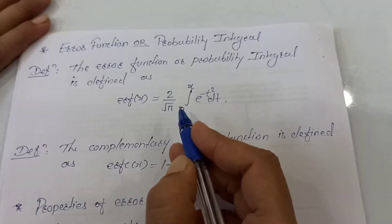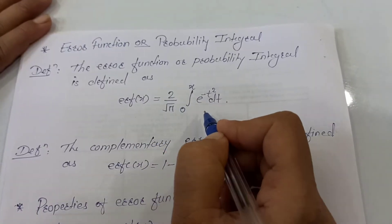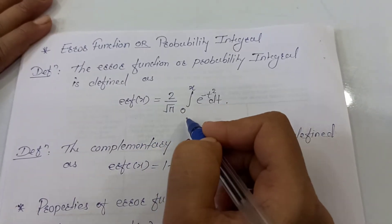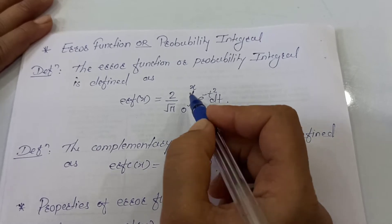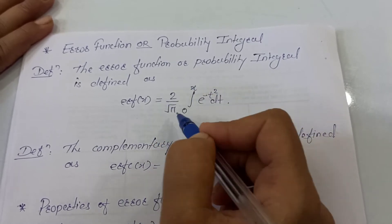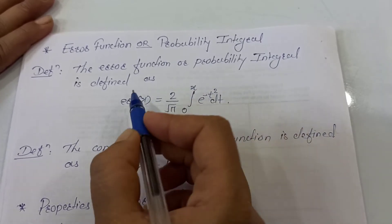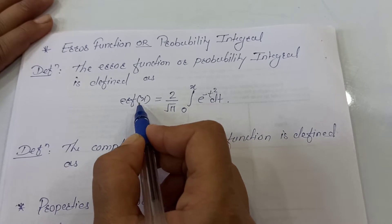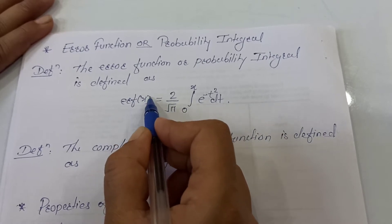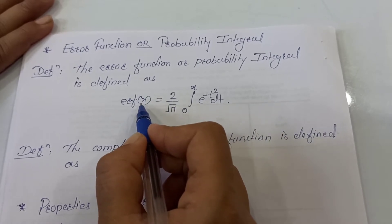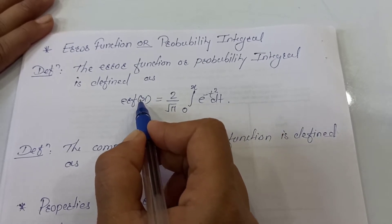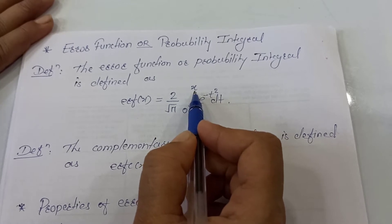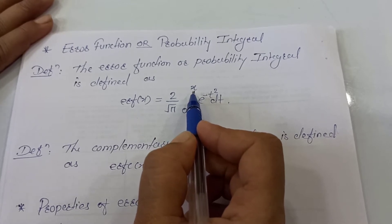This entire term on the right hand side is called the error function, and for denoting this error function we use the notation Erf of x. Whatever argument we are passing here, x, is basically the upper limit of the integration on the right hand side.